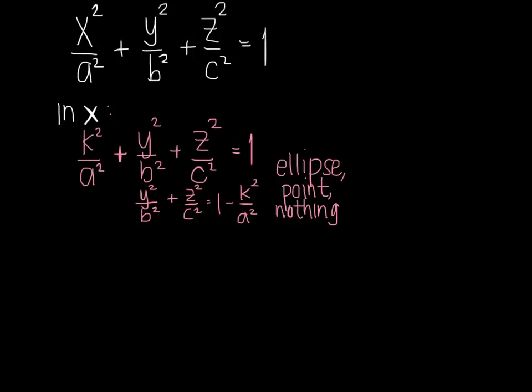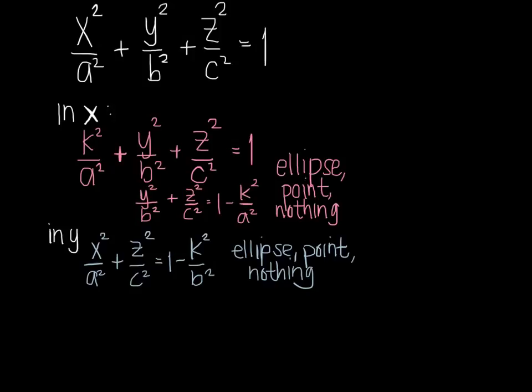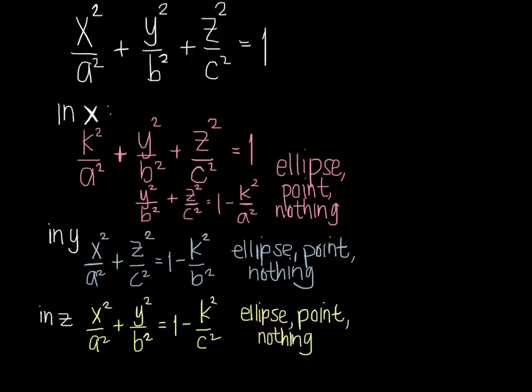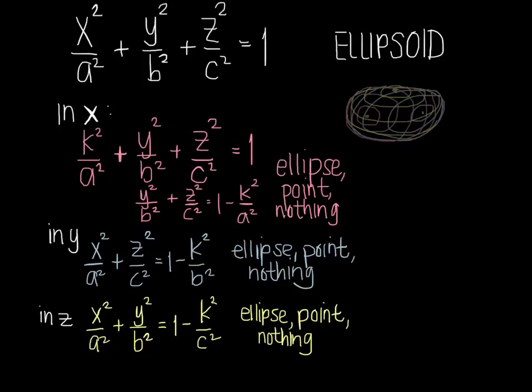The traces in Y give the exact same result, and the same thing happens for traces in Z. Altogether, this is an ellipsoid — an egg-shaped object. As K gets larger and larger, the traces eventually go to a point and then stop existing altogether, meaning you're outside the ellipsoid.